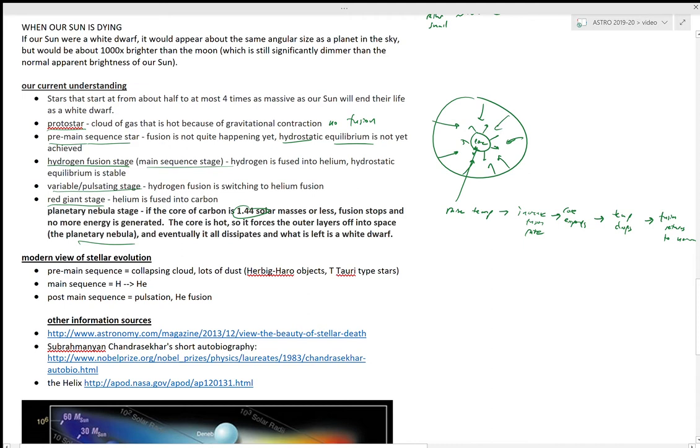And eventually it all dissipates and what is left is a white dwarf. And that white dwarf will cool and become - not a yellow dwarf like our Sun - but the surface temperature is going to cool so much that it goes through all the thermal spectrum colors and eventually just becomes a very cool chunk of carbon and oxygen in this degenerate state.